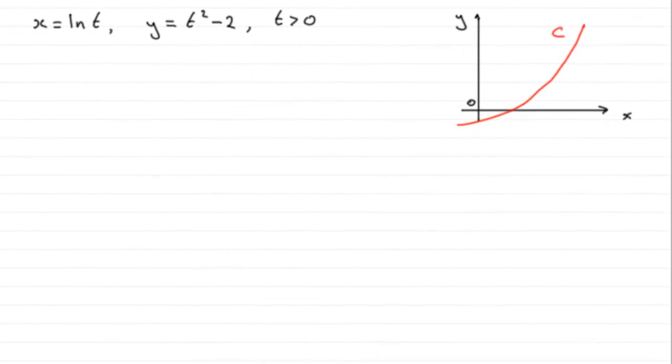Now for this question, we're given this parametric equation for the curve C: x equals natural log of t and y equals t squared minus 2, where t is greater than 0.